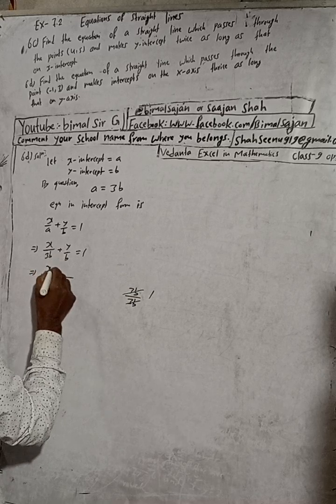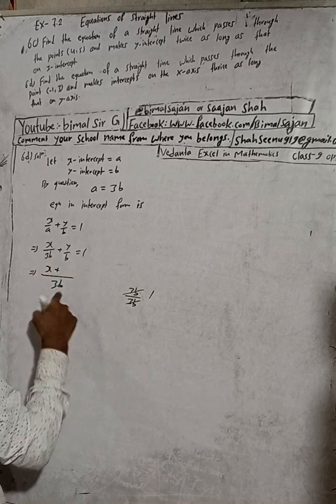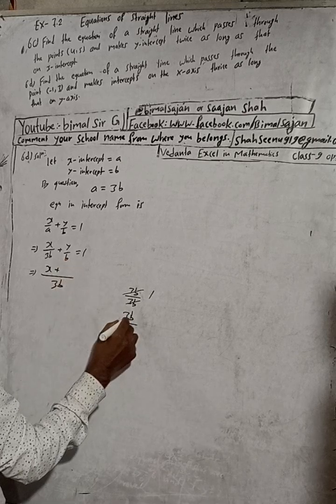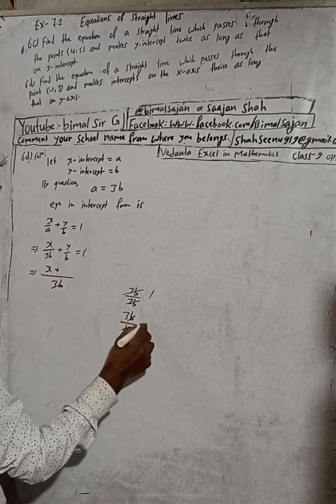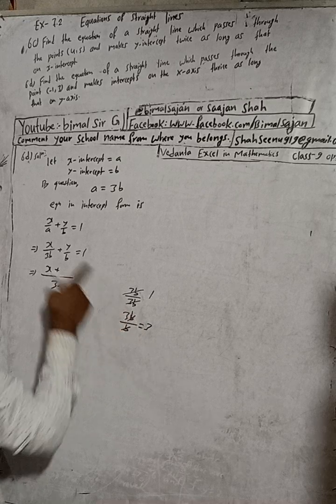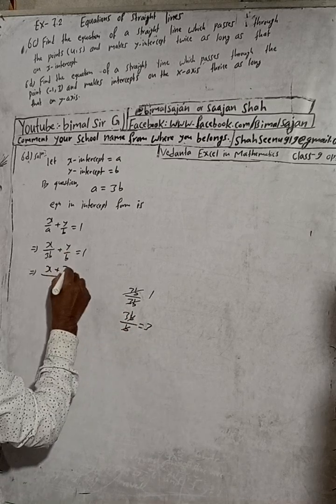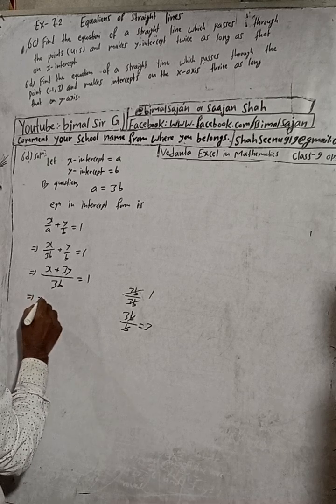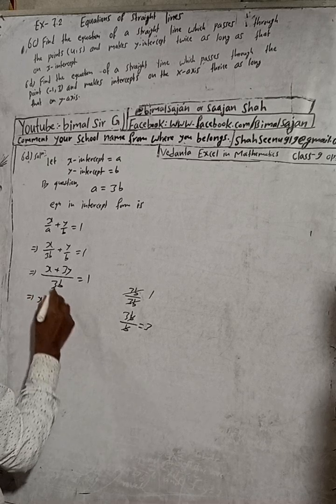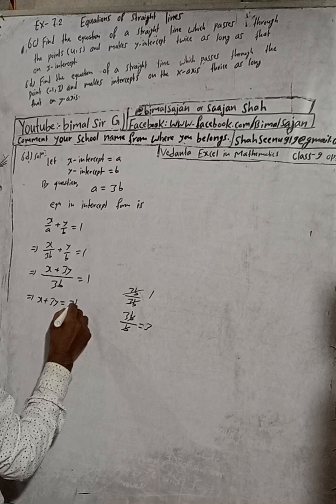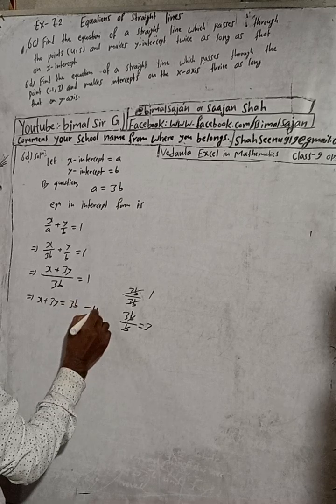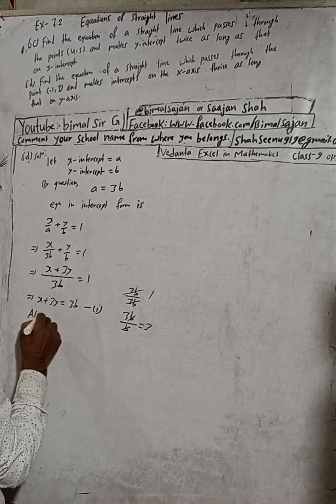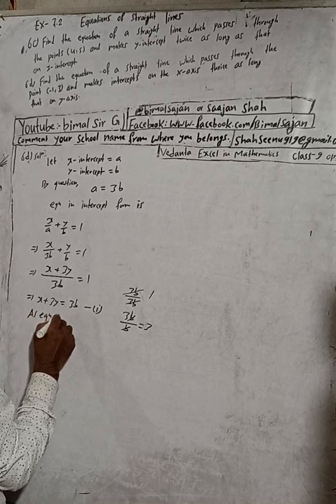3b divided by 3b is 1, so multiply this with x, we get x. Now our LCM is again 3b, divide with this b, b cancels, we get 3. So multiply this y with 3, we get 3y. So x plus 3y is equal to 3b into 1, which is 3b. This is our equation 1.